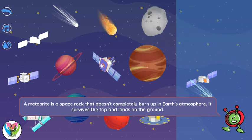A meteorite is a space rock that doesn't completely burn up in Earth's atmosphere. It survives the trip and lands on the ground.